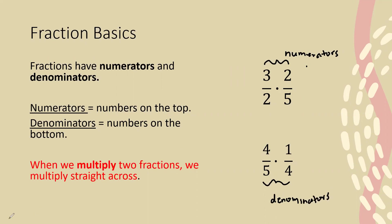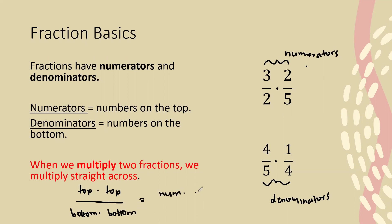So why do they matter? They matter because when we multiply two fractions, we multiply straight across. We multiply top times top — the top number times the top number — and the bottom number times the bottom number. That's a little easier to say than numerator times numerator and denominator times denominator, but it means the exact same thing.